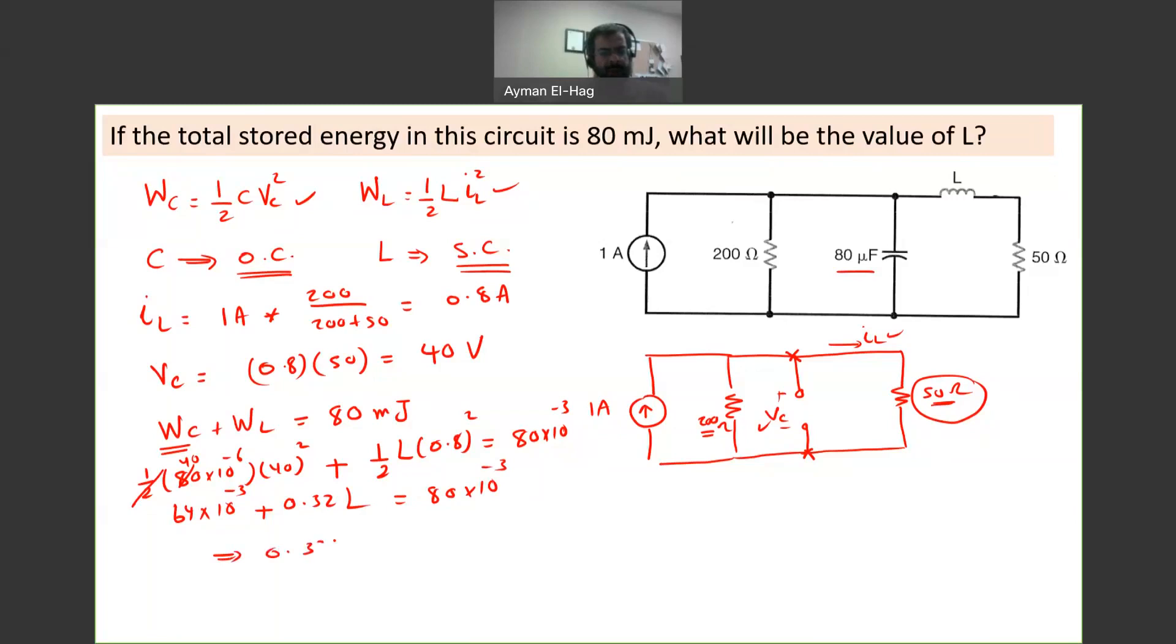0.32L would equal 80 times 10 to the minus 3 minus 64 times 10 to the minus 3, and this is equal to 16 times 10 to the minus 3. So your L is equal to 50 millihenries.